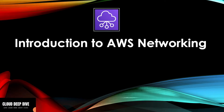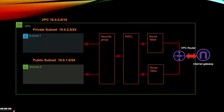Hey guys, welcome to another video of Cloud Deep Dive. In this series we are talking about AWS networking. So far we have discussed VPC, subnets, different types of private and public subnets, security groups, route tables, and internet gateways. In today's video we will talk about NACL — Network Access Control List.